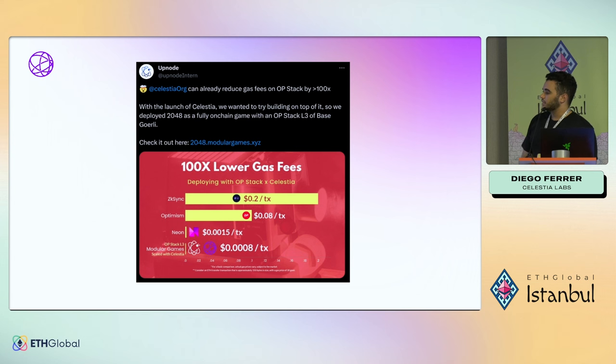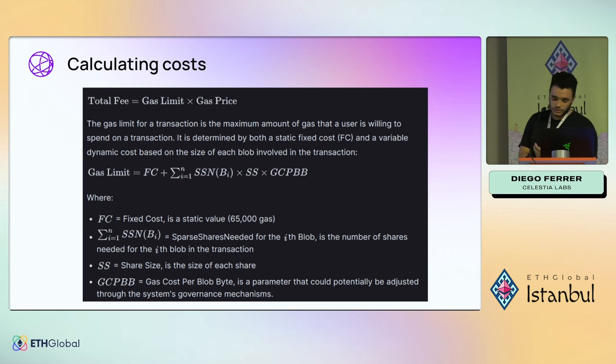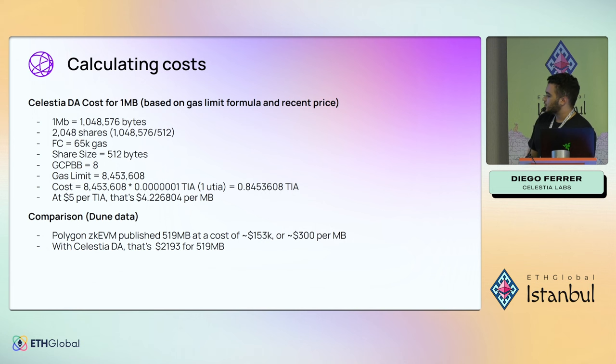Here's an example from the folks at Upnode running a 2048 game on an OP Stack Celestia chain, showing how cheap it is to execute a transaction. For cost estimates: Polygon zkEVM published about half a gigabyte of data at a cost of $153,000 in one month, or $300 per megabyte. With Celestia DA at $5 per TIA, that's $4.22 per megabyte — which would have cost Polygon zkEVM only $2,000 in DA costs.